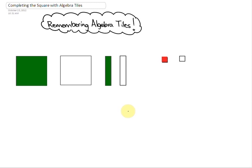All right, in this lesson we are going to be looking at something called completing the square. Before we do that we're just going to review the algebra tiles.